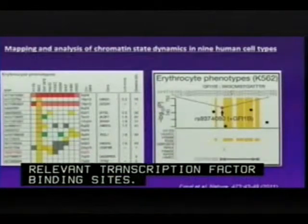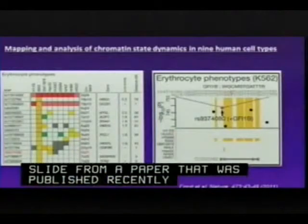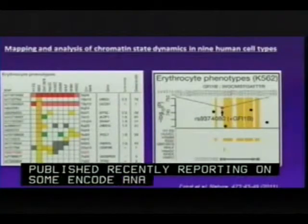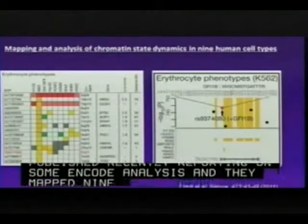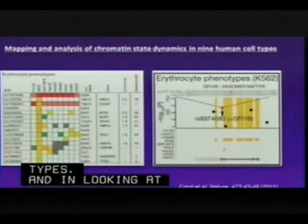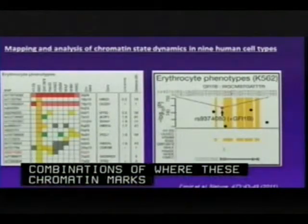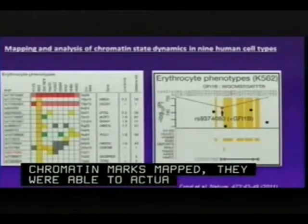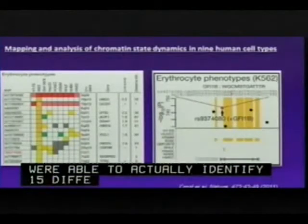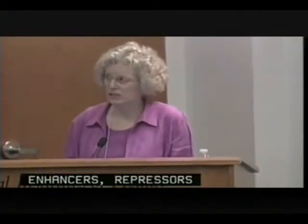An example comes from a paper recently published by the Bernstein group. They mapped nine different chromatin marks in nine cell types. By looking at combinations of where these chromatin marks mapped, they were able to identify fifteen different chromatin states associated with different functions such as promoters, enhancers, repressors, and inactive DNA regions, as well as transcribed regions. Interestingly, this landscape of chromatin states differed significantly in the different cell types.